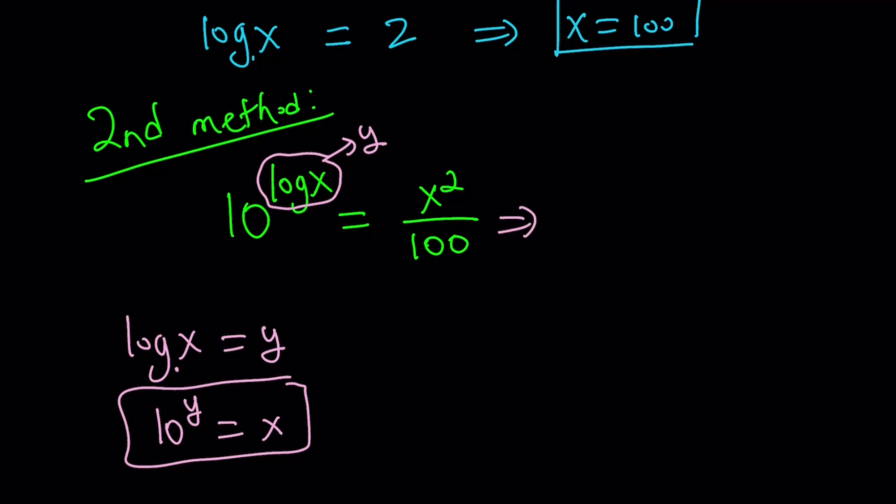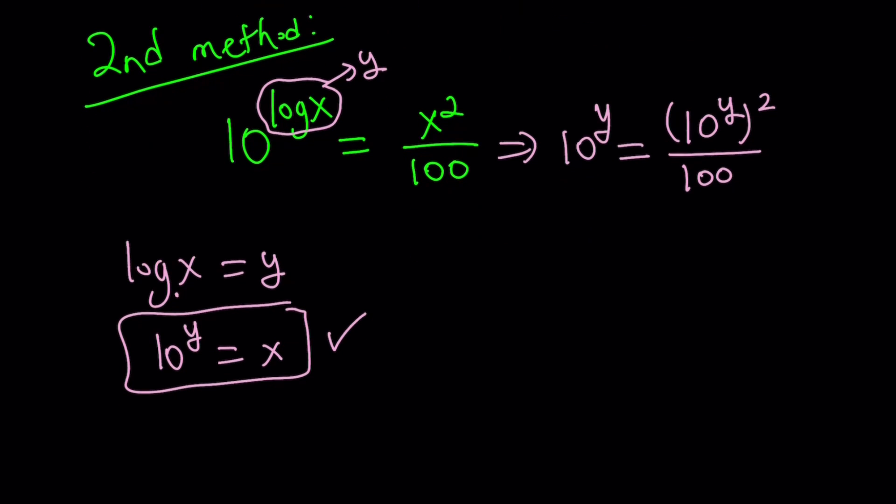From here, we get 10 to the power y equals x squared, and this is x. So we're going to replace x with 10 to the power y squared. And notice that we got the same thing on both sides. Even though they were written differently, they kind of mean the same thing, divided by 100. And then from here, it's just a matter of cross-multiplying, simplifying, so on and so forth.